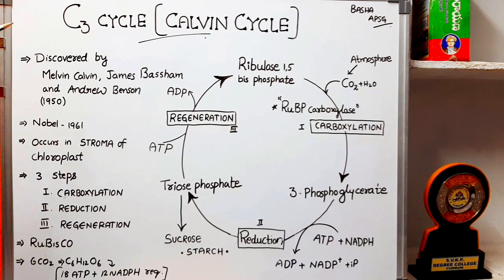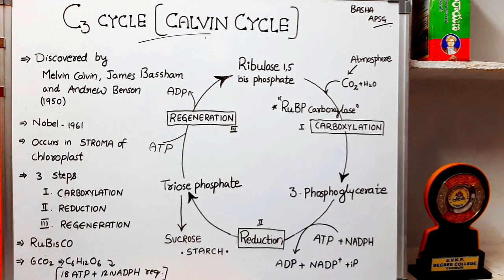Melvin Calvin used radioactive C14 in algal photosynthesis and discovered that the first CO2 fixation product was a 3-carbon organic acid, also called as 3-phosphoglyceric acid. This 3-phosphoglyceric acid consists of 3 carbons, and that is why this cycle is called the C3 Cycle.